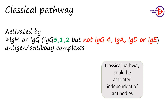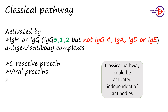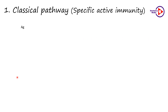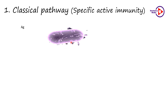There are other proteins which can activate the classical pathway other than the antibodies. Those include the C-reactive protein, viral proteins, polyanions, apoptotic cells and amyloid. The classical pathway is so called because it was first identified. It is also called specific active immunity.